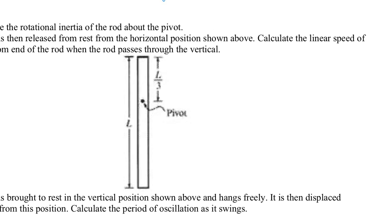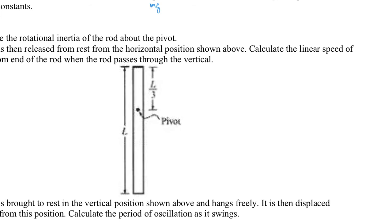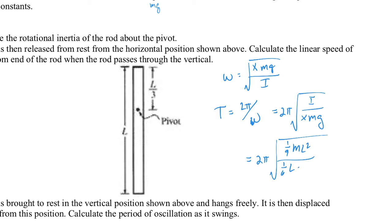Now let's go ahead and do the period. So period equals two pi divided by omega and omega for a physical pendulum is square root of x m g over i. So that means this is two pi times the root of i over x m g which will be two pi times all right let's put it all together one-ninth ML squared divided by x which is one-sixth L m g.